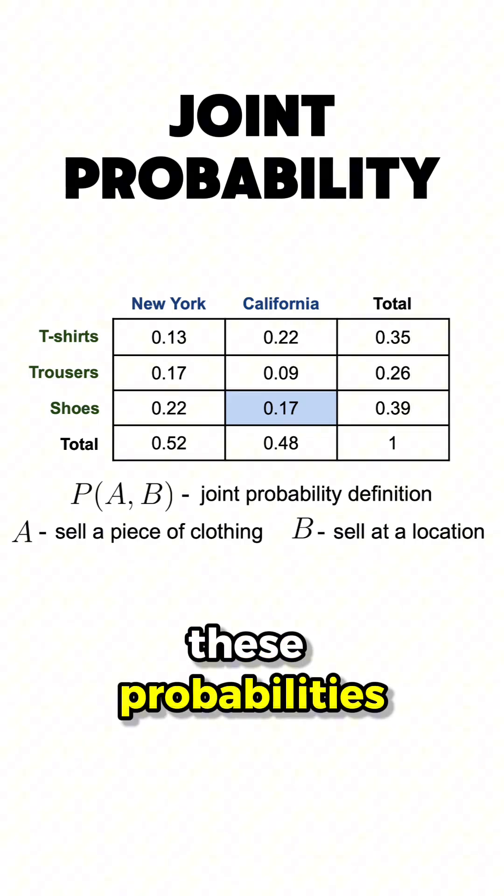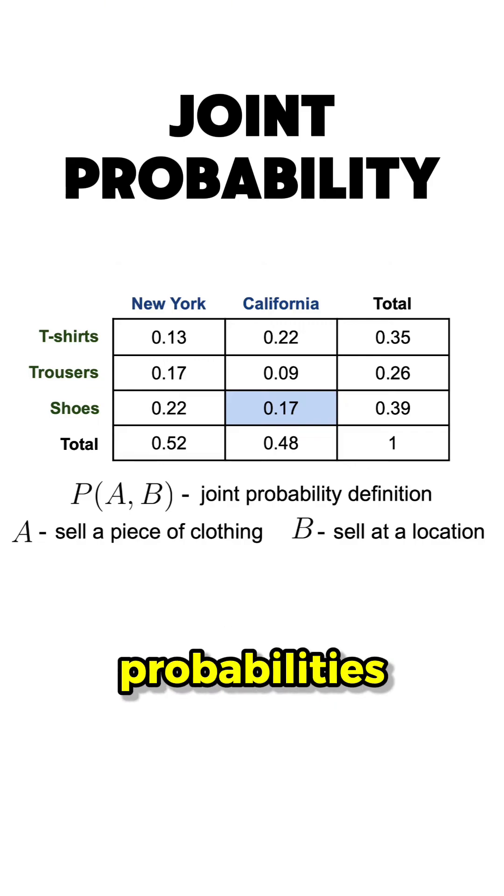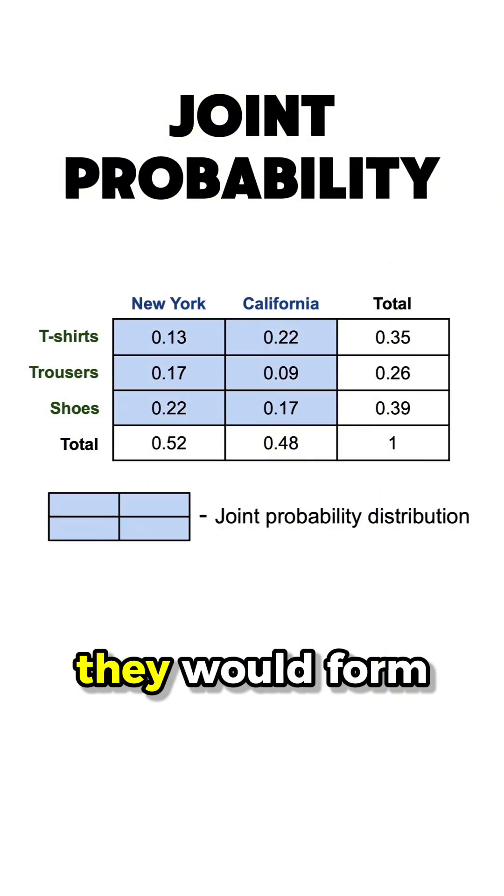So all of these probabilities here are joint probabilities, and if we were to put all together, they would form the joint probability distribution of selling a piece of clothing at a certain location.